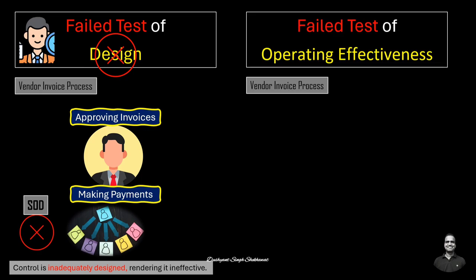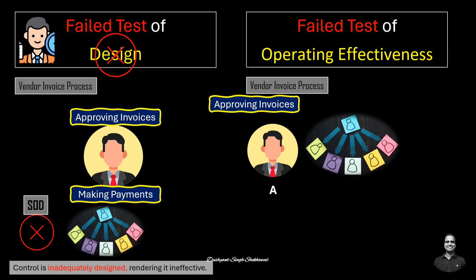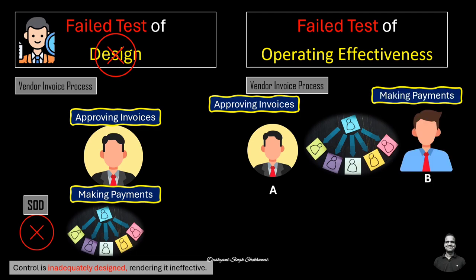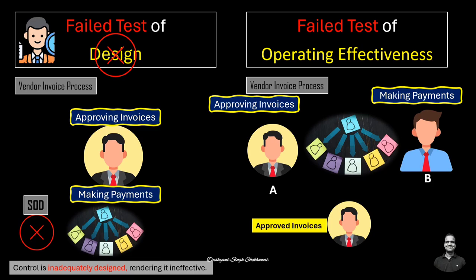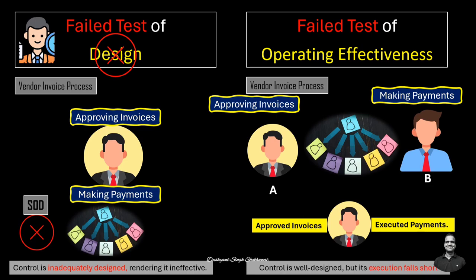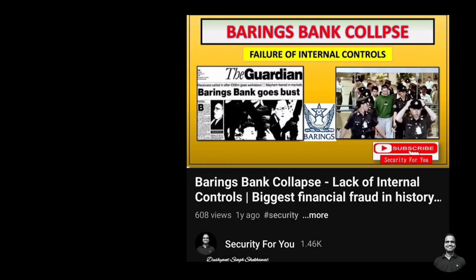Continuing with the same vendor invoice process, let's assume the organization has a well-designed control: invoices are approved by person A and payments are executed by person B, adhering to segregation of duties principles. However, during the operating effectiveness test, the auditor selects a sample and finds instances where approver A has both approved invoices and executed payments — violating the control's intended operation. This is a perfect example of well-designed control with failed execution. A similar real-world case is the collapse of Barings Bank, covered in a separate video.